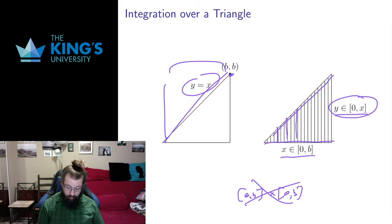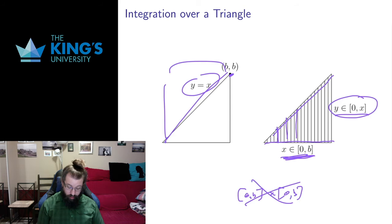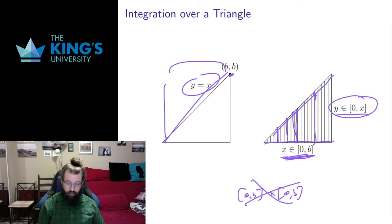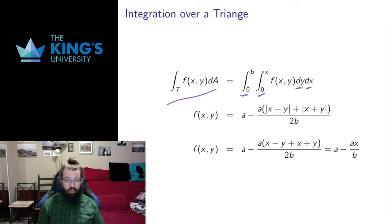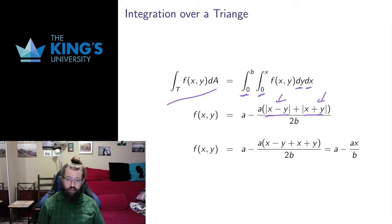The bounds in y now depend on the bounds in x. When x is 1, I only go up to y equals 1. When x is 2, I go up to y equals 2. When x is 3, I go up to y equals 3. This describes the triangle by using variable bounds. So if T is the triangle, I set up the integral with constant bounds in x from 0 to b, and variable bounds in y from 0 to x. On that triangle I can drop both absolute value signs — both are positive and x is larger than y — so I actually have a function I can integrate.